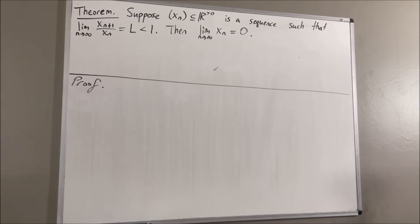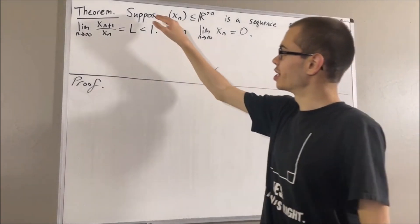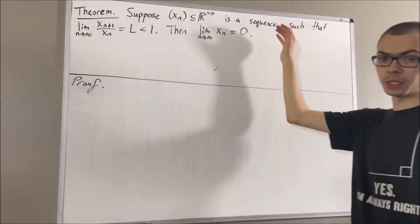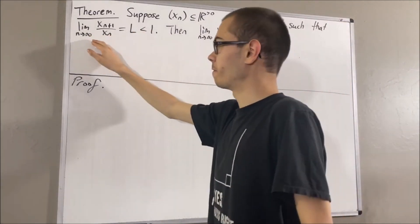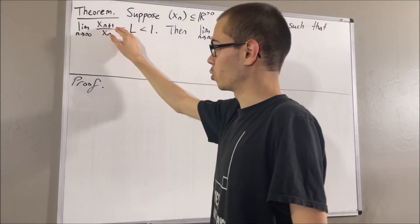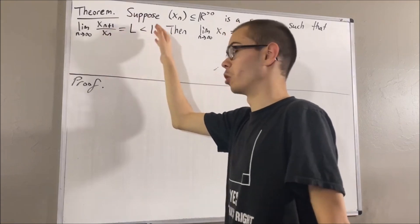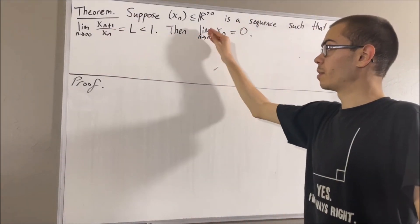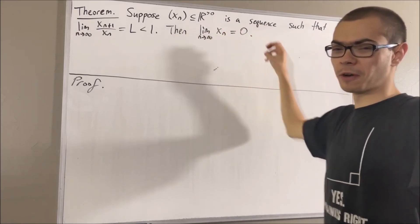Hello! In this video, we are going to prove the following theorem. Suppose xn is a sequence of positive real numbers, such that the limit as n approaches infinity of x_{n+1} over x_n converges to a value l less than 1. Then, the limit as n approaches infinity of xn converges to 0.